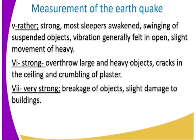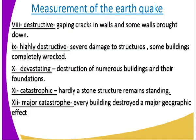Roman VII brings significant damage. Roman VIII and IX involve cracks in the walls and some structures brought down. Roman IX is highly destructive, with severe damage to structures and some buildings completely destroyed. Roman X is devastating, with destruction of numerous buildings and their foundations. Roman XI is catastrophic — hardly a standing structure remains. Roman XII is a major catastrophe.